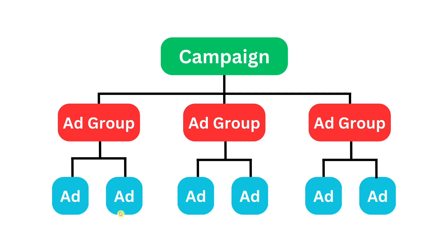An example would be: you have the campaign 'shoes' — so you have an e-commerce online shop about shoes or shirts, and this shoe topic is the campaign. The campaign is basically the topic, the business, or the objective. For instance: I want to sell shoes, this is why I have a TikTok campaign.